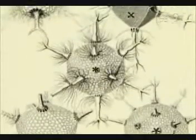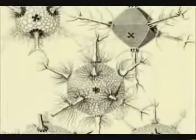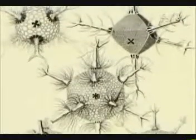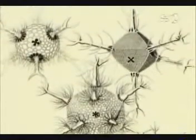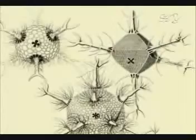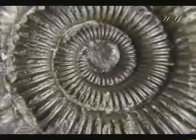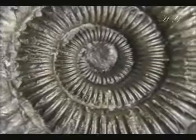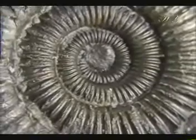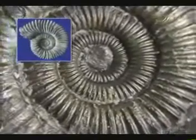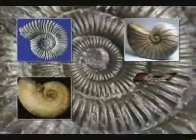The cochlea in the human inner ear serves to transmit sound vibrations. This bony structure filled with fluid has a logarithmic spiral shape with a fixed angle of 73 degrees 43 minutes, containing the golden ratio.